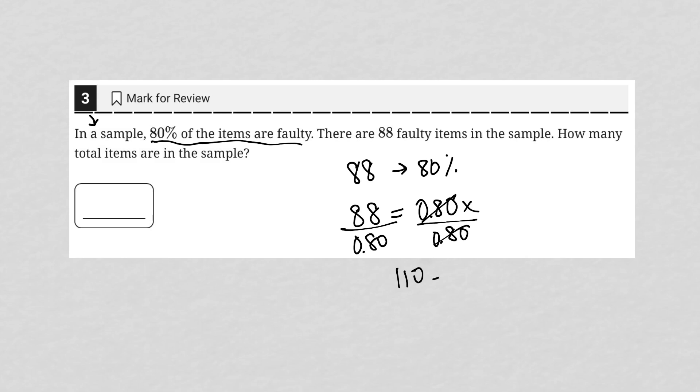So 110 equals X. That means there must have been a total of 110 items in order for 80% of them to equal 88.